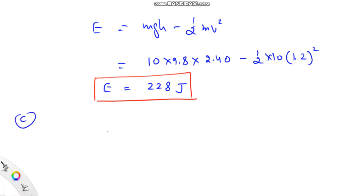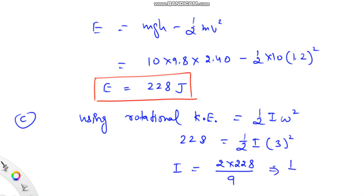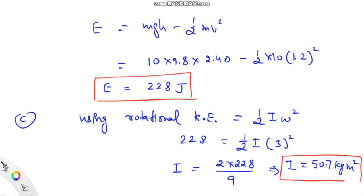In the third part of the problem, we find the moment of inertia of the wheel using the expression for rotational kinetic energy: E = ½·I·ω². So 228 = ½ × I × (3)², which gives I = 2 × 228 / 9. The rotational inertia or moment of inertia of the wheel comes out to be 50.7 kilogram·meter squared. That is the answer for the third and last part of this problem.